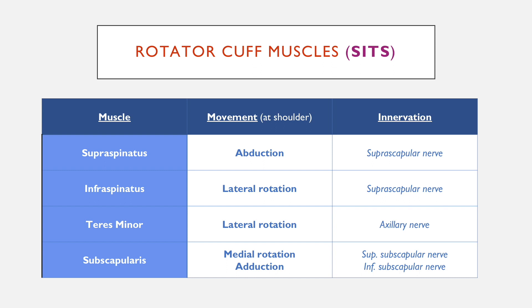Lateral rotation is also called external rotation. If you fix your elbow to the side and move your hand out, that's the movement you would get. Subscapularis carries out medial rotation as well as adduction — it does the opposite. If you put your elbow to your side and bring your hand in, subscapularis is primarily responsible for that movement.